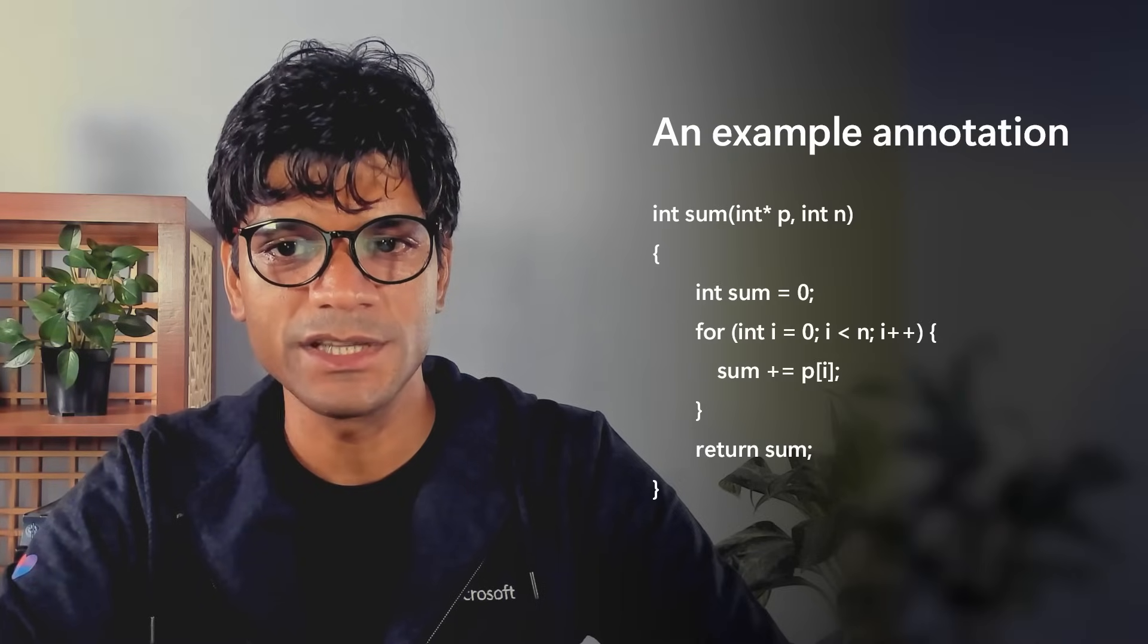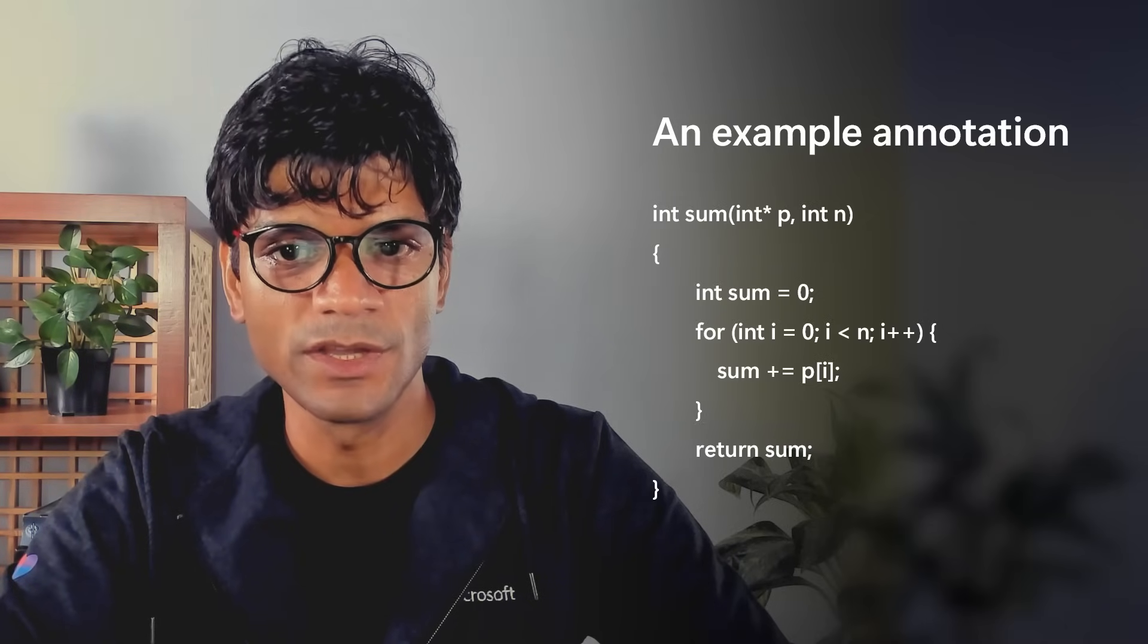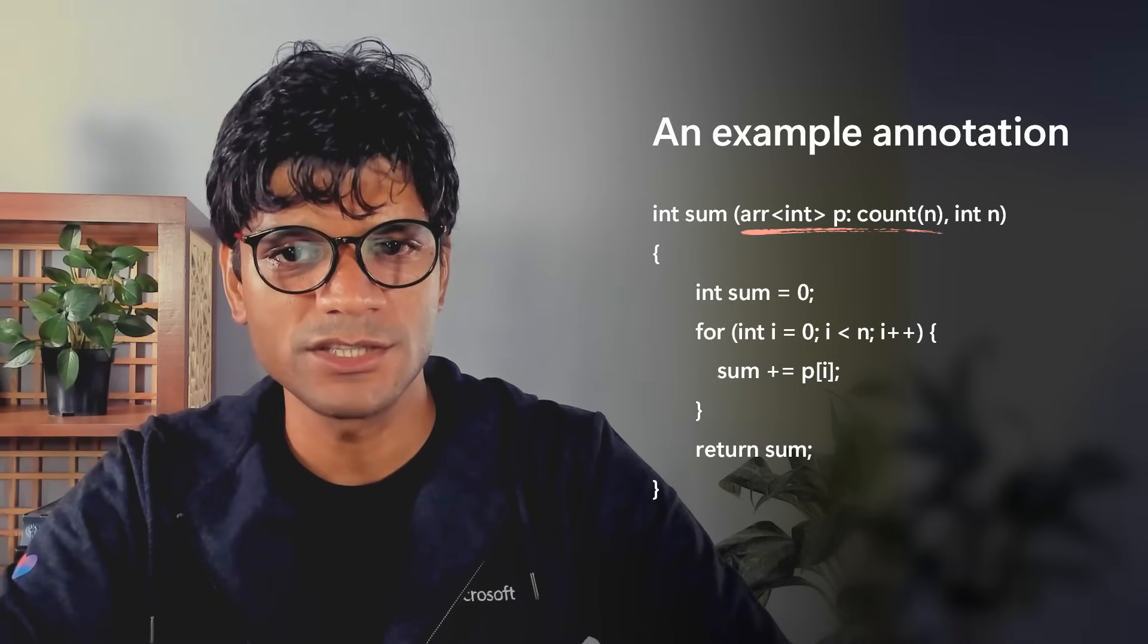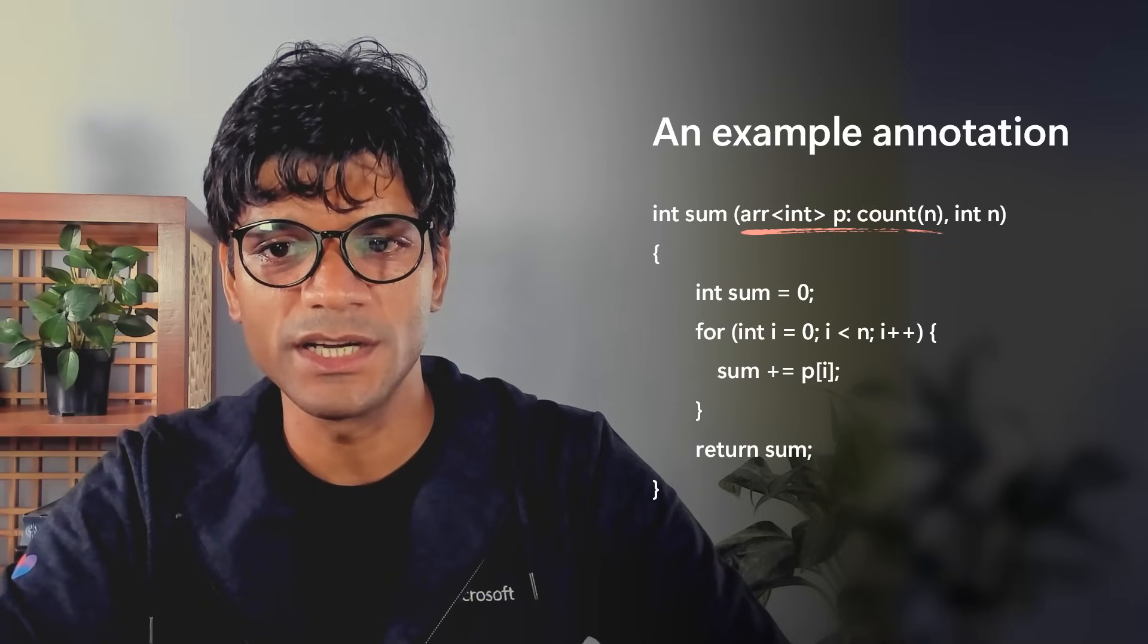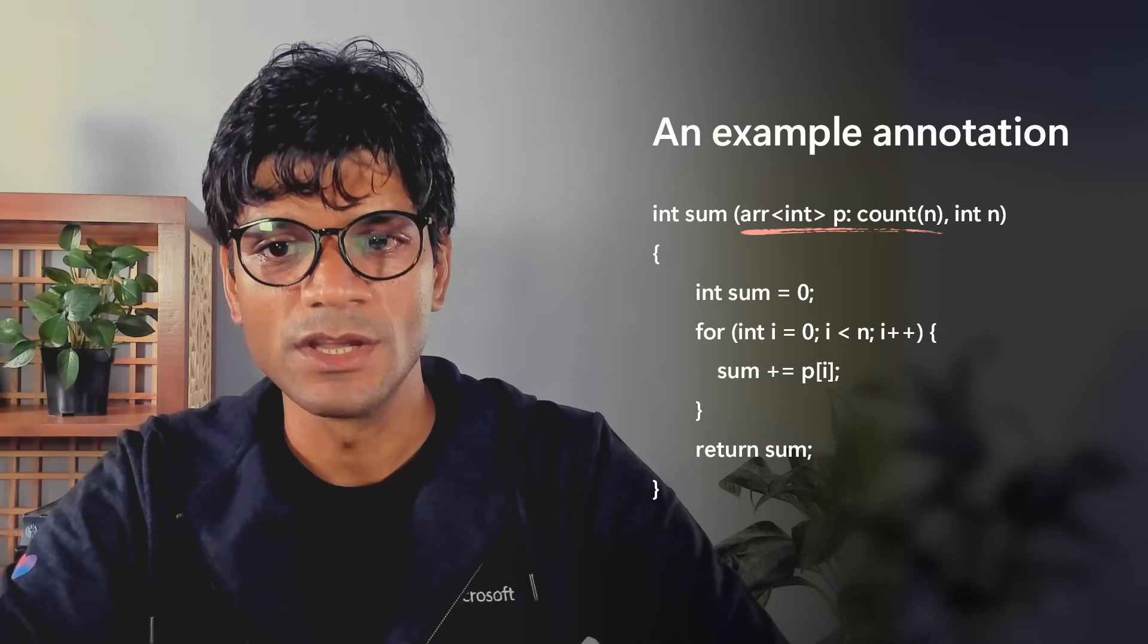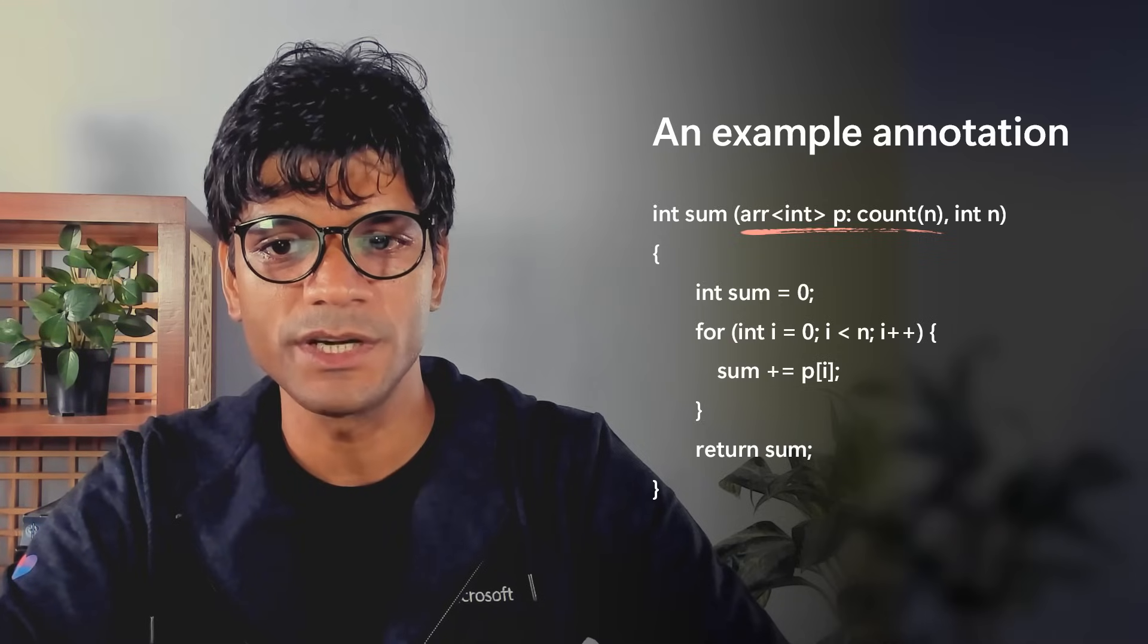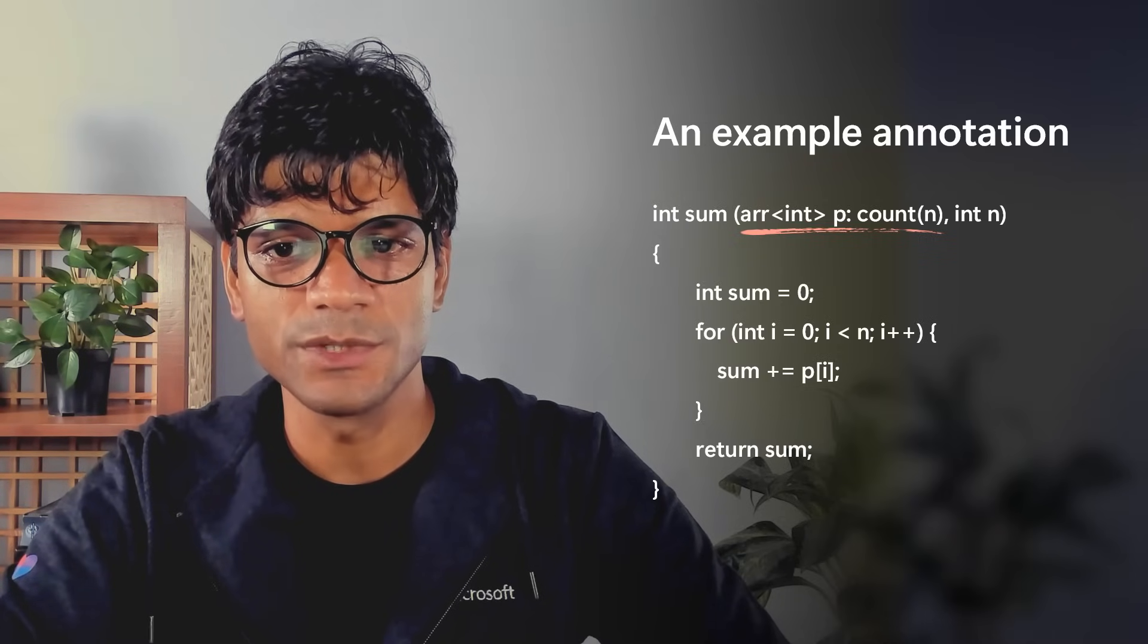Let's consider an example that takes an array of integers as input and sums the first n elements. To reason about the memory safety of this function, Check C requires an annotation on P. One such annotation is as shown here. This tells the compiler that P is an array with at least n elements, which is enough to ensure the safety of memory accesses in this function. It also helps impose an explicit obligation on the callers of this function that they must pass an appropriately sized array to it.